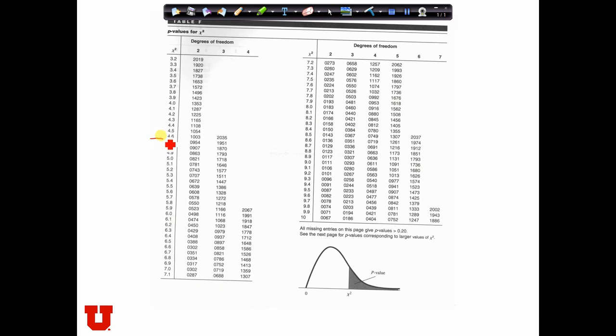So we go down to 4.6. Now, if we had, say, 2 degrees of freedom, that would be a p-value of 10%, and therefore we would reject. With 3 degrees of freedom, it's a p-value of 20%, and therefore we reject.